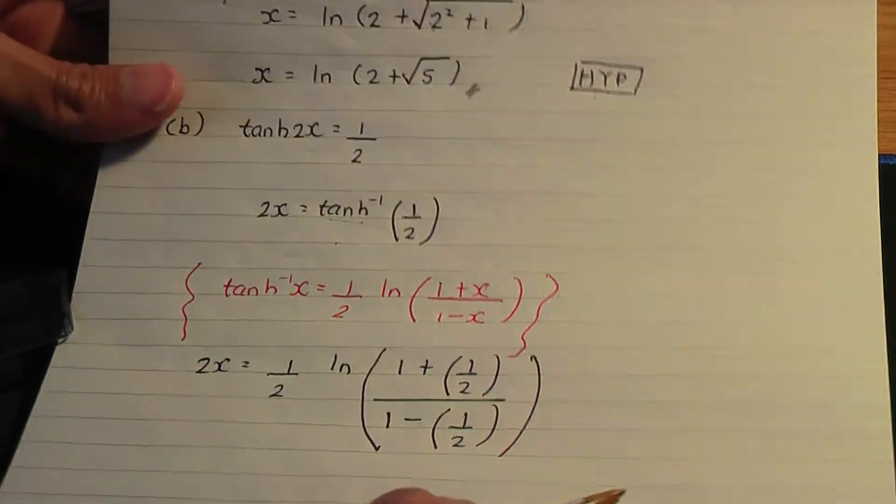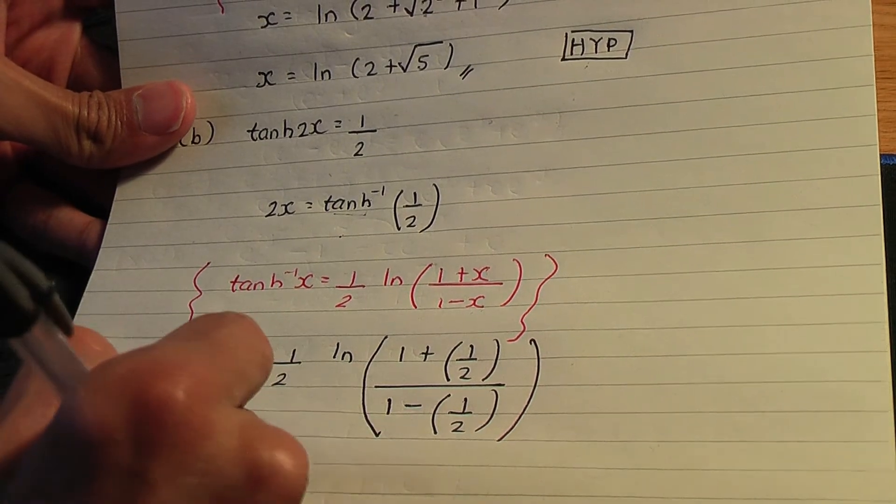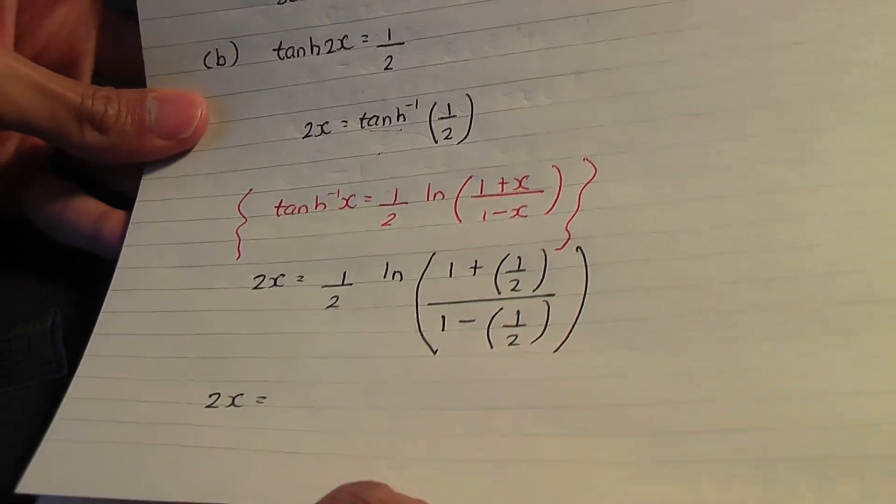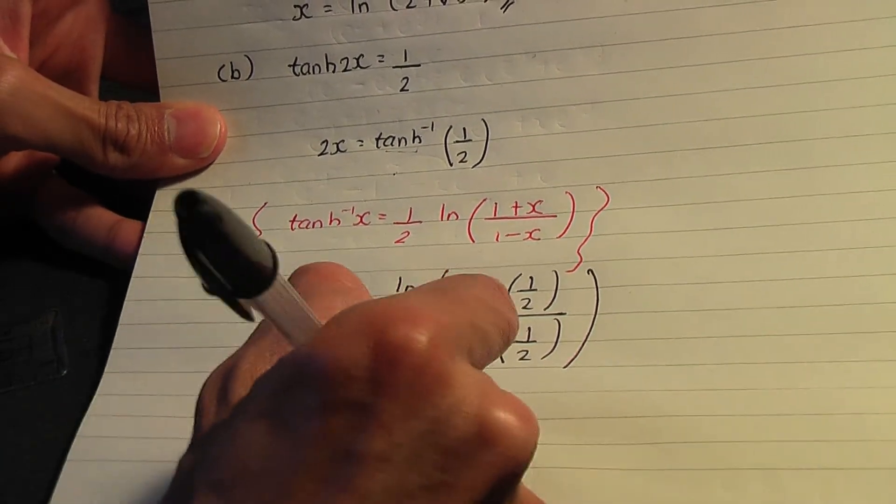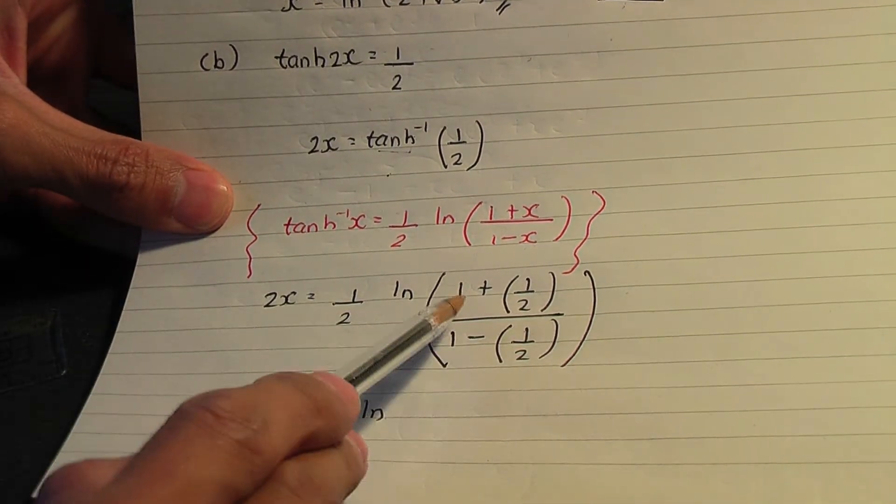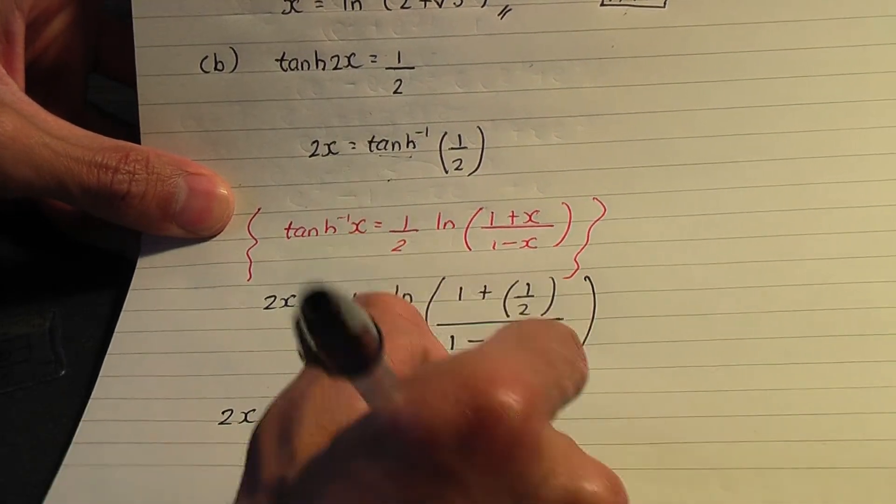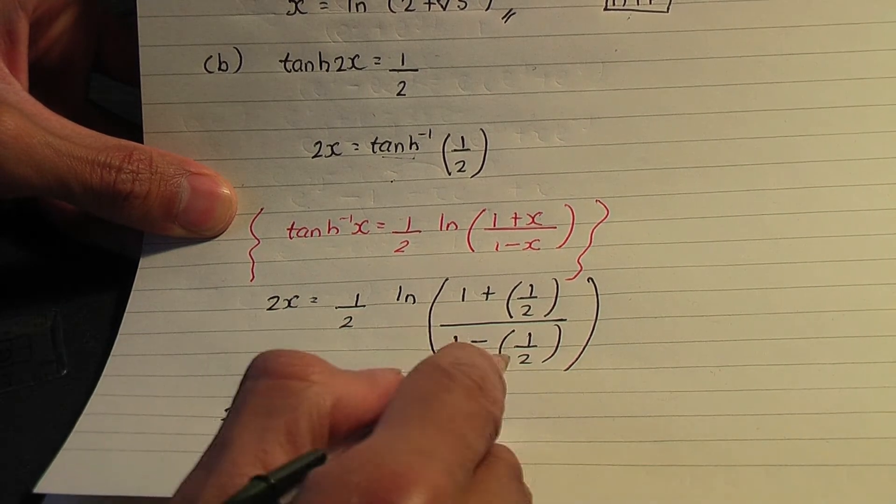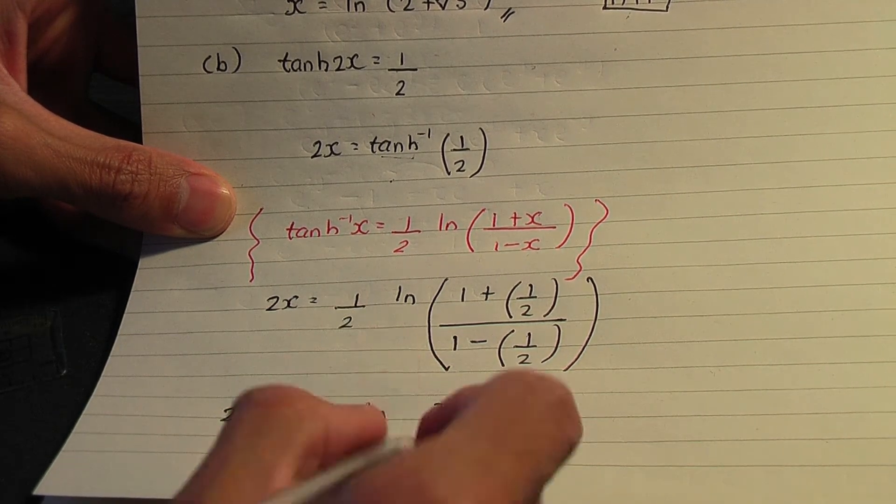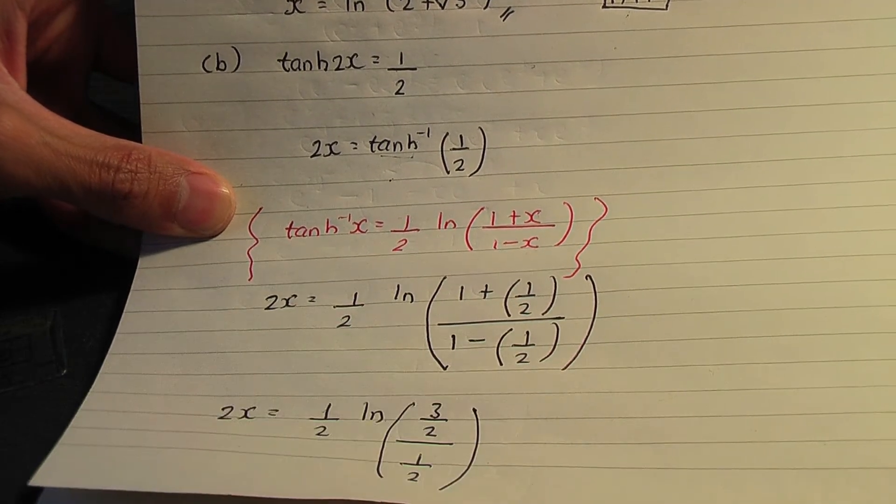I'm going to simplify that. Simplifying will give us 2x is equal to 1 over 2 ln, 1 plus half on top is 3 over 2, over 1 minus half below is 1 over 2.